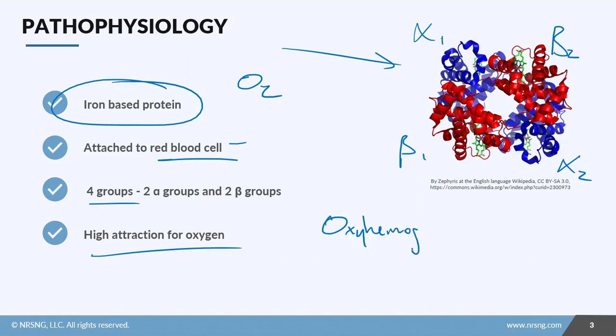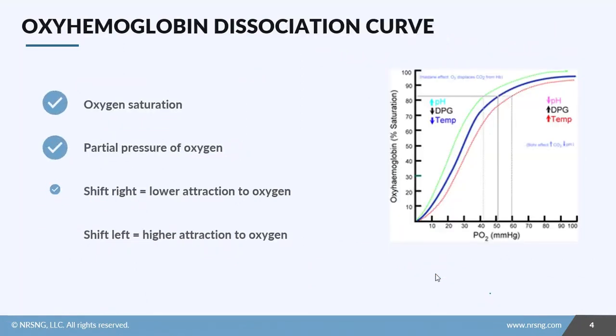If they have oxygen attached, we call this oxyhemoglobin, and if it doesn't, we call it deoxyhemoglobin. This one says yes, we have oxygen; this one says no, we don't have oxygen. This is really important for something called the oxyhemoglobin dissociation curve that we're going to talk about now.